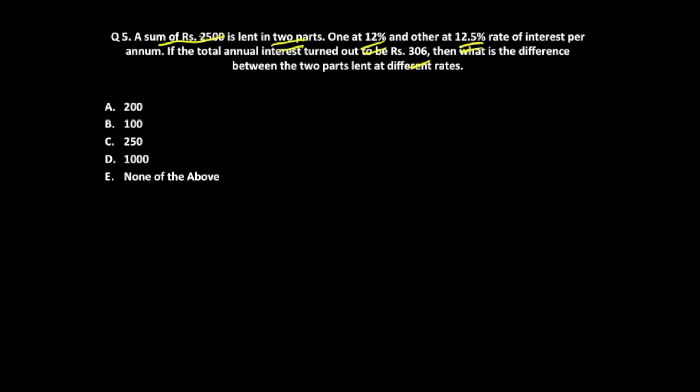One approach that students usually use, but I would suggest not to follow, involves using two variables: x + y = 2500. Once you have two variables, you would be thinking what to write next.